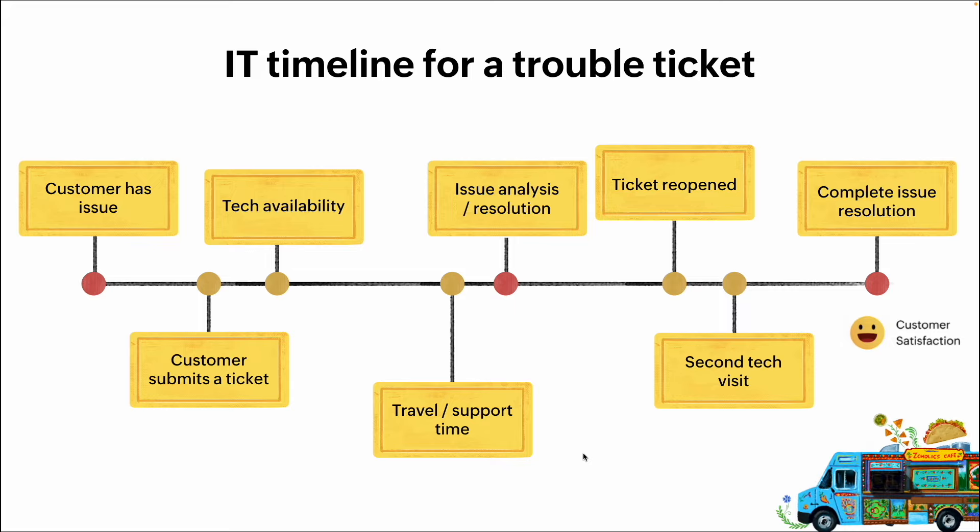Once that ticket goes in, it has to go to a technician. If all your techs are busy, he's going to wait for somebody to grab that ticket and start addressing it. Once that technician gets the ticket and contacts Bob, he has to get out to Bob's office — maybe he's on a higher floor, maybe he's at a remote location — so now we've got travel time involved. Once the tech gets there, he has to diagnose and figure out what's going on.